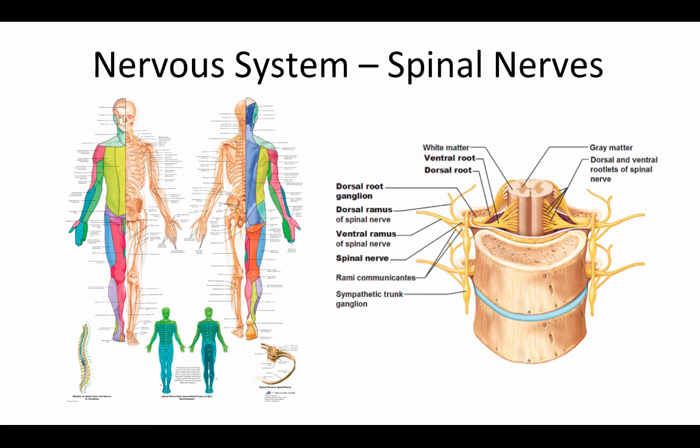The vertebrate nervous system is an incredibly complex topic. Just the human nervous system by itself would be a whole course of study if explored in all the detail in which it's known and understood. So this is going to be a very brief overview of the basic structure and function of the vertebrate nervous system and a brief overview of the evolutionary patterns. We're going to start out with the spinal nerves.